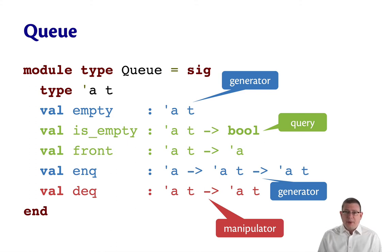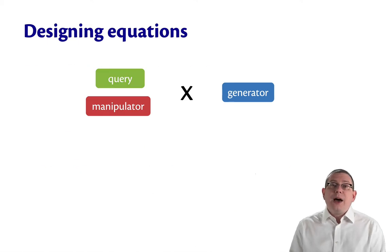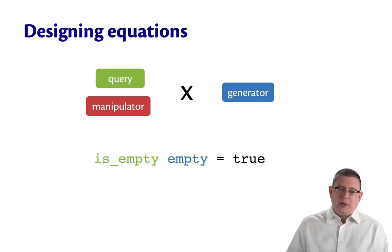Queues are the same, by the way. All of these operations are essentially the same as we've seen before. It's just how they interact that differs a little according to the equational specification. So how do we design equations? We take the cross product of the queries and manipulators with the generators. So pick one from the left-hand side. Like maybe you pick is_empty. And then pick another from the right-hand side. So maybe you pick empty.